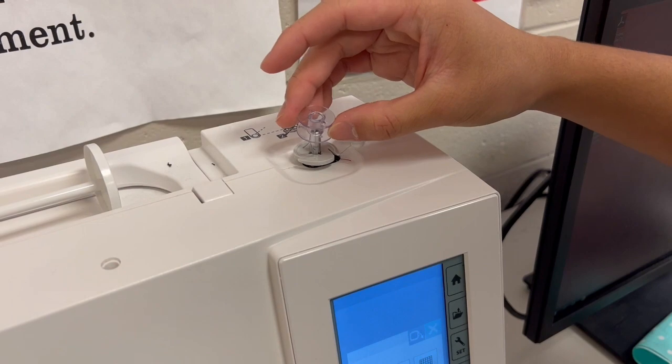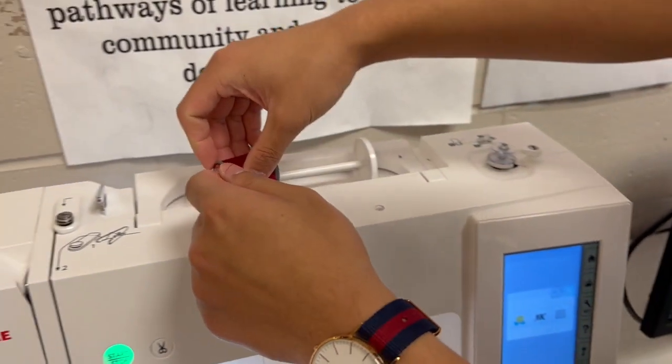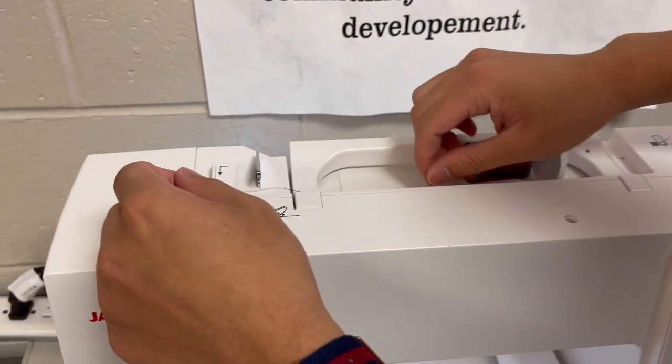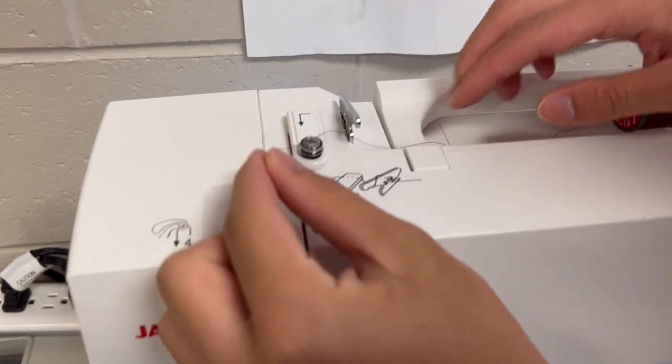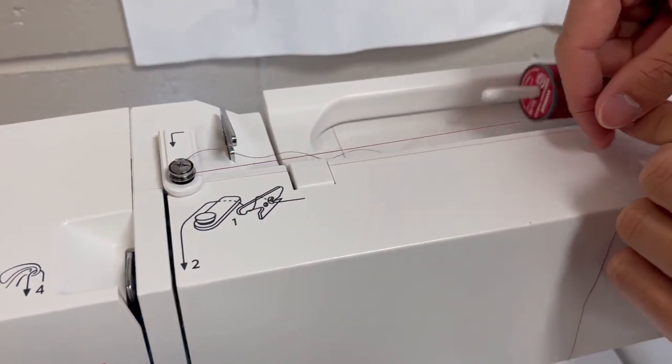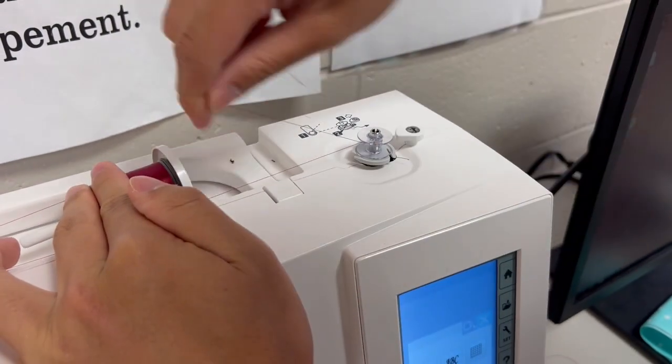Place the bobbin onto the bobbin winder on the top right of the machine. Place the thread onto the spool pin. Take the thread and wrap it once around the bobbin winder thread guide. Next, wrap the thread firmly around the bobbin several times.